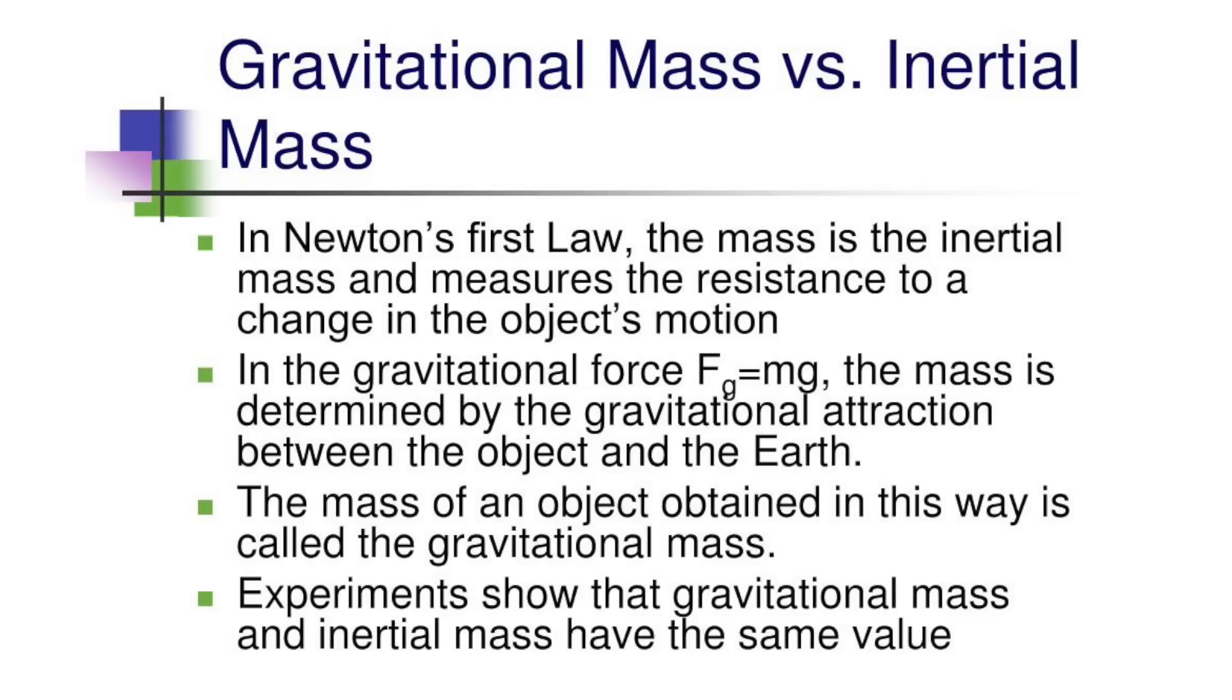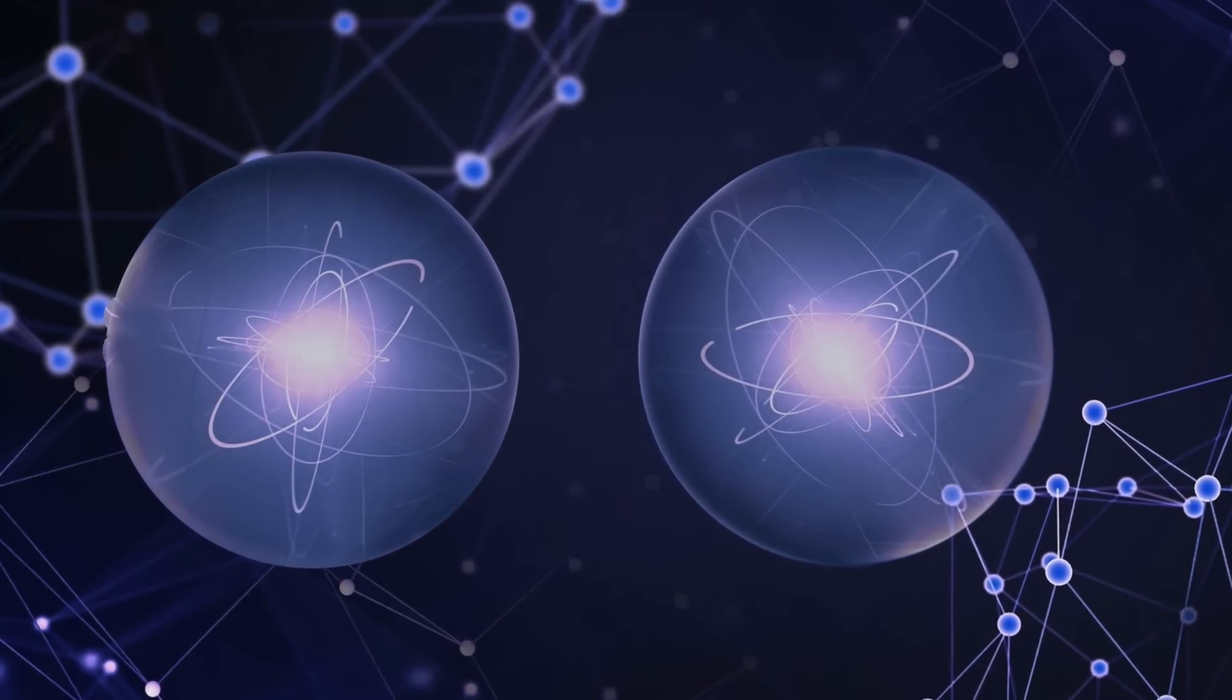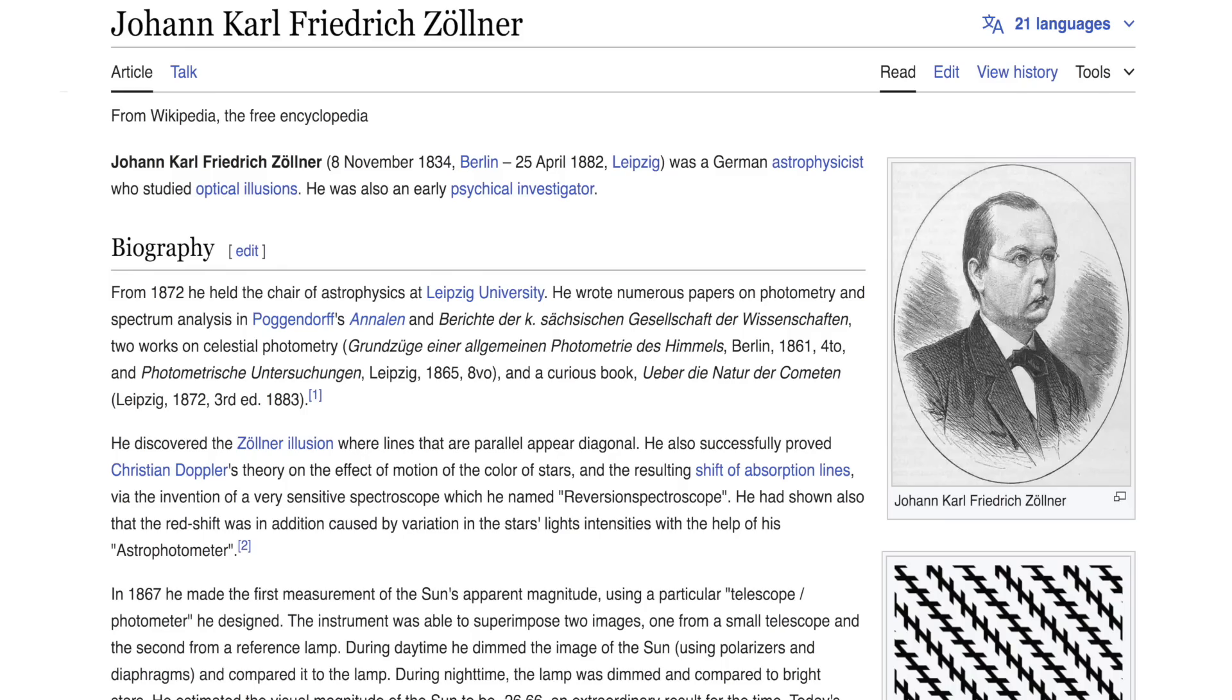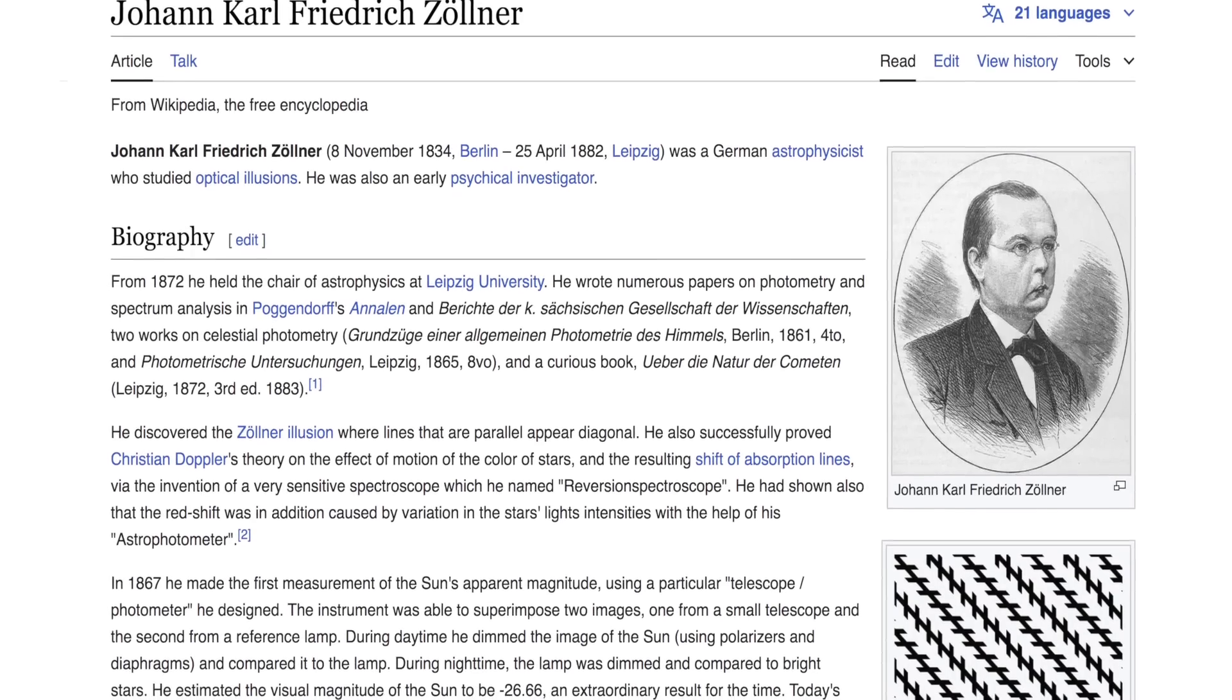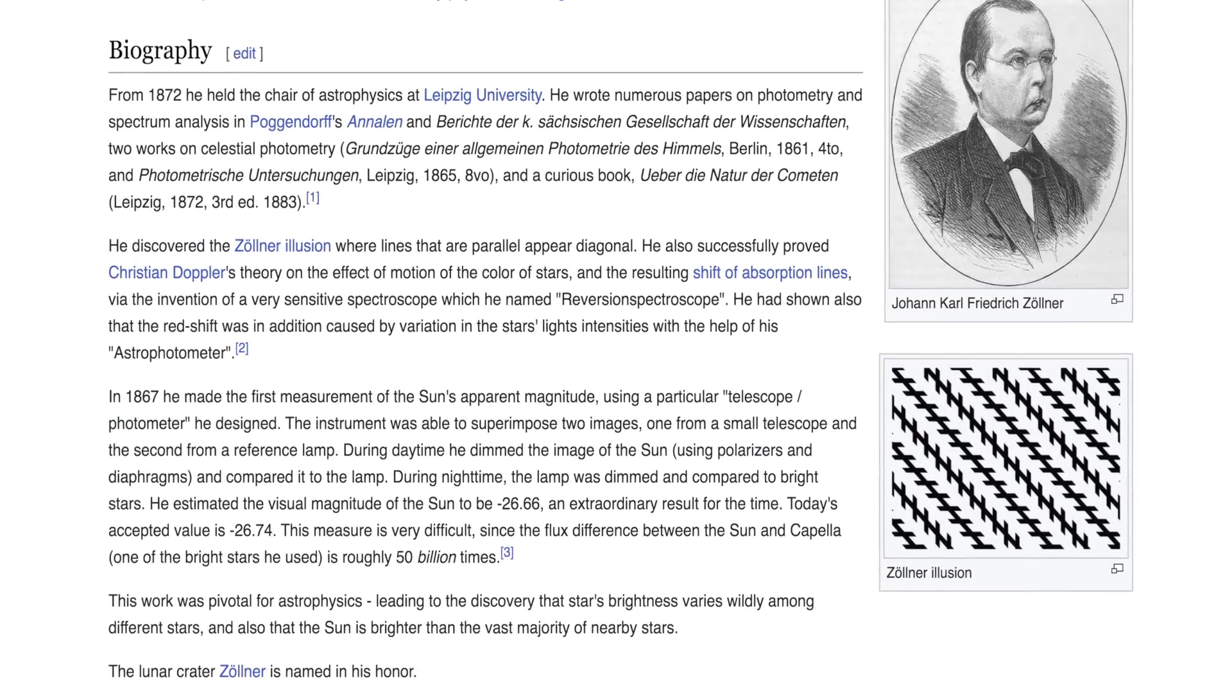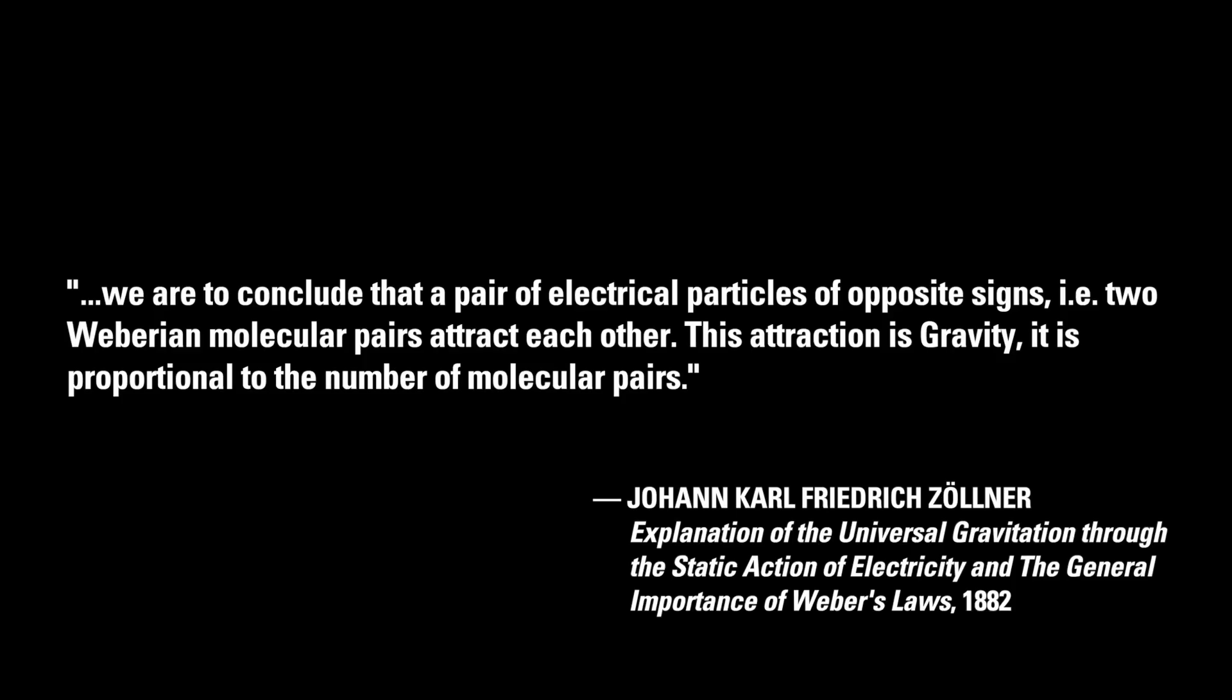The equivalence of inertial and gravitational mass implies that gravity is also an electrical force. Before Einstein, some noted scientists were suggesting that the gravitational force between neutral particles might ultimately be due to electrical polarization within the particles. In 1882, Frederick Zollner wrote in his book, Explanation of Universal Gravitation Through the Static Action of Electricity: We are to conclude that a pair of electrical particles of opposite signs, two Weberian molecular pairs, attract each other. This attraction is gravity. It is proportional to the number of molecular pairs.